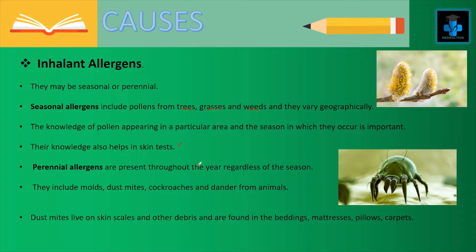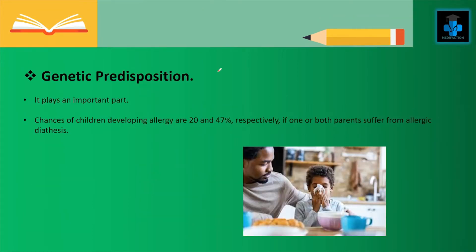Perennial allergens are present throughout the year regardless of the season. They include molds, dust mites, cockroaches and dander from animals. Dust mites live on skin scales and other debris and are found in beddings, mattresses, pillows and even on carpets. The other cause is genetic predisposition, which plays an important part — the chances of children developing allergy are 20% and 47% respectively if one or both parents suffer from allergic diathesis.